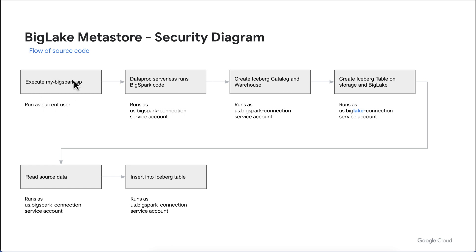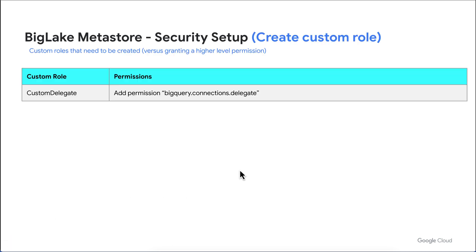Here's the flow of the security. We're going to execute a stored procedure that runs as you. Then Dataproc serverless will run as the BigSpark connection service account. It will create an Iceberg catalog and warehouse. This BigSpark connection will then call to the BigLake connection, and this will create our Iceberg tables within BigQuery. Then we can read our source data with BigSpark and insert data using BigSpark.